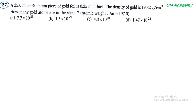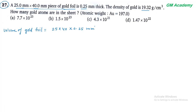Next question 27. एक piece of gold foil दिया गया जिसके dimensions 25, 40 and 0.25 mm हैं। Density 19.32 gram per cm³ दी गई है। Volume of gold foil = 25 × 40 × 0.25 = 250 mm³ = 250 × 10⁻³ cm³।